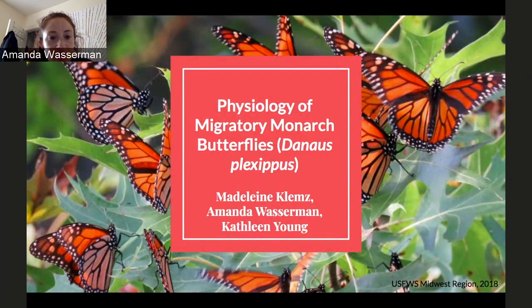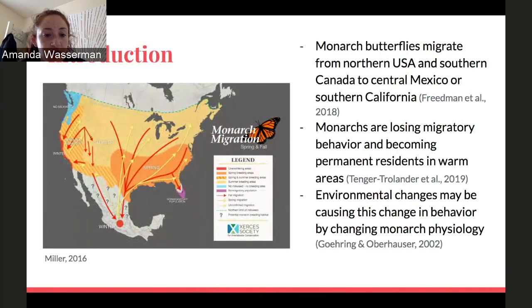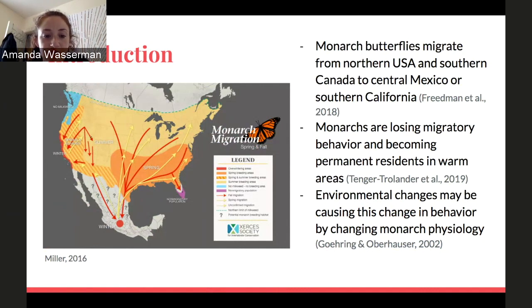To give a little background, monarch butterflies that originate in the northern United States and southern Canada migrate to central Mexico or southern California in the winter. This figure shows the migration routes for monarchs in the spring by the yellow arrows and the fall by the red arrows in the United States. However, migratory monarch butterfly populations are decreasing as more monarchs are becoming permanent residents in warm areas.